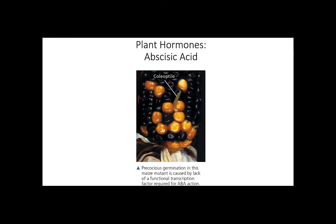The next hormone is abscisic acid. Contrary to other hormones we have discussed so far, abscisic acid, or ABA, slows growth, meaning that this hormone inhibits the action of growth hormones. The main two effects of ABA are seed dormancy and drought tolerance. During seed maturation, ABA levels spike and this inhibits germination until there are sufficient growth factors like water and light. In plants where ABA is absent, as shown in the corn image, germination is premature and the coleoptile will emerge even when seeds are still attached to fruits.